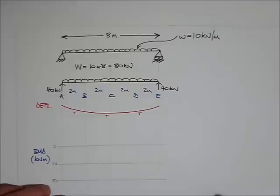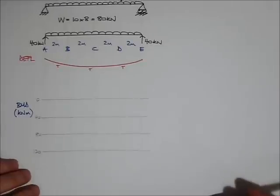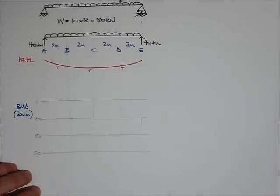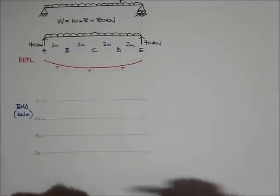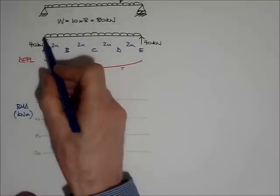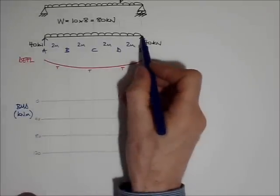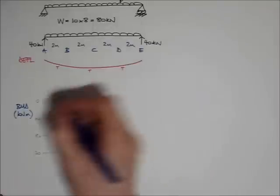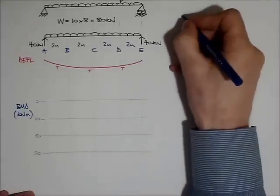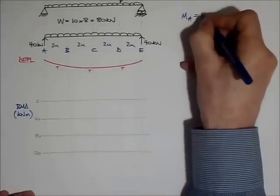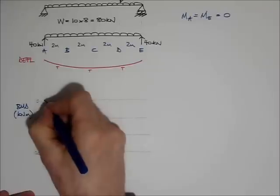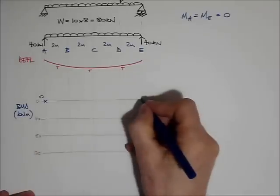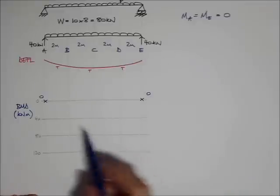I'm going to start at A and E — my favourite positions — because the bending moment at a pin support for a beam that's not continuous across the end of the support is always zero. So MA equals ME equals 0.